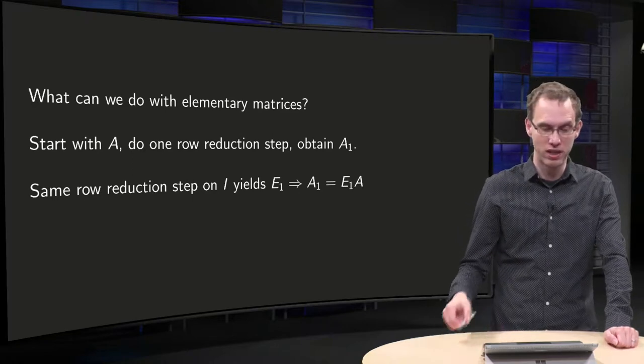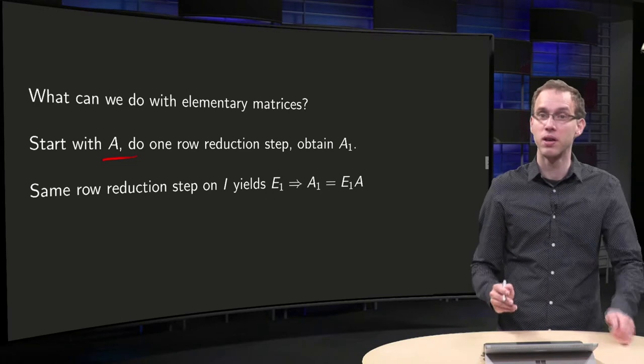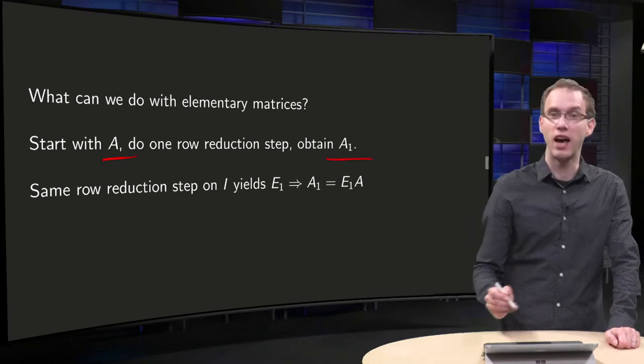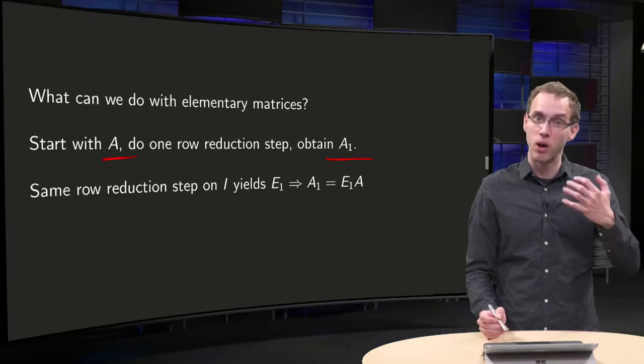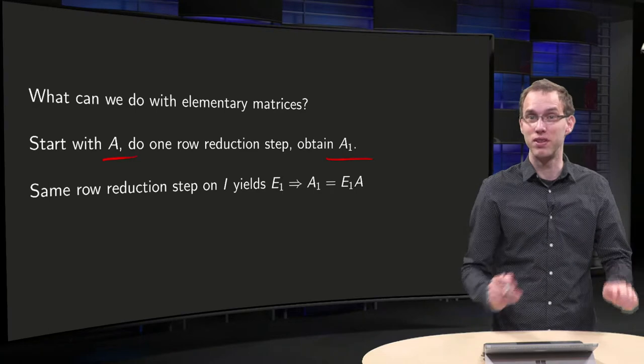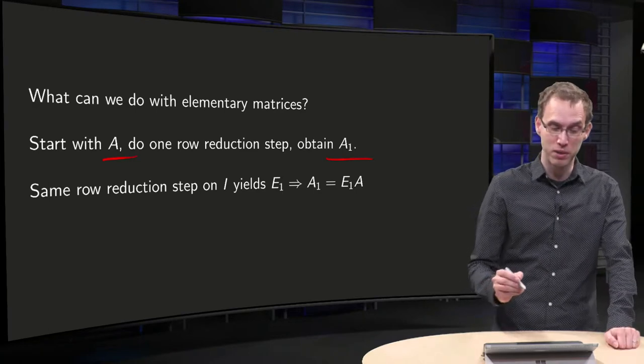So what is the idea? We will start with some matrix A, and if we do one row reduction step, we obtain A1. We can also obtain this matrix A1 by multiplying on the left with an appropriate elementary matrix.